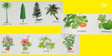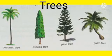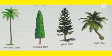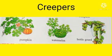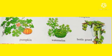These all come under the plant kingdom. Trees are big, strong, and straight plants. Shrubs are small and bushy plants. Creepers are weak plants that creep and grow along the ground.